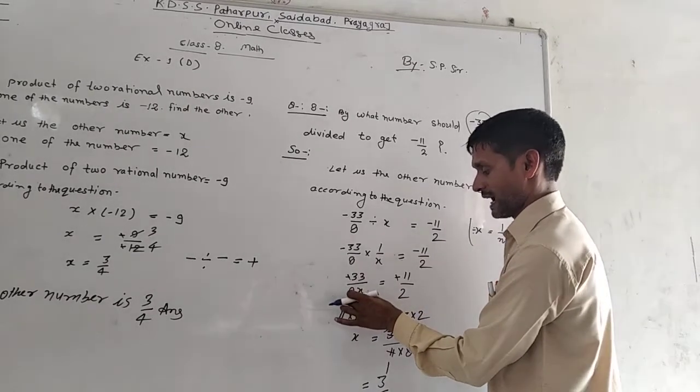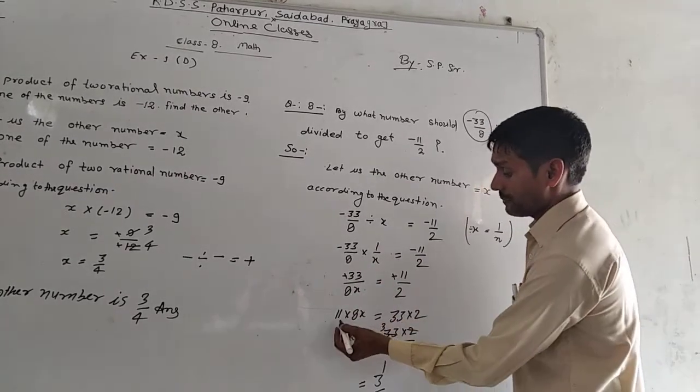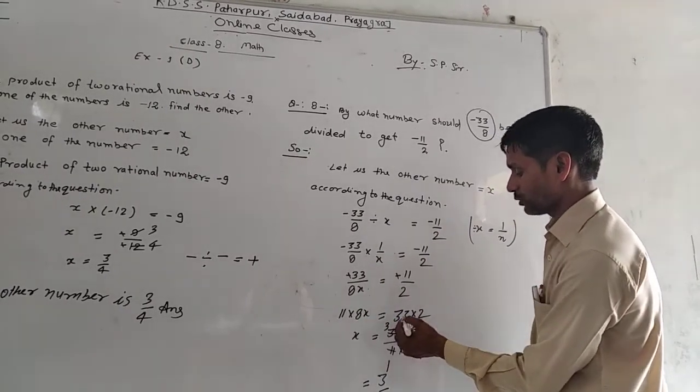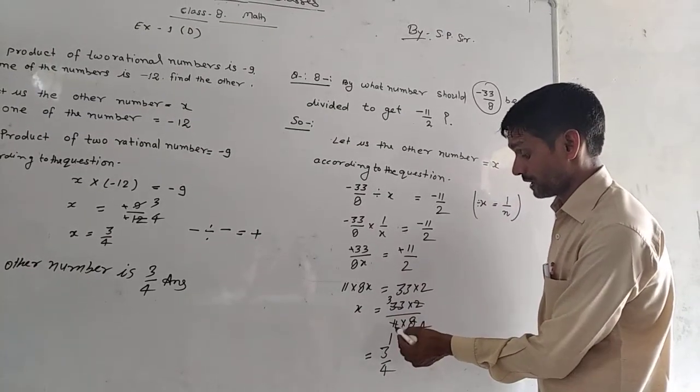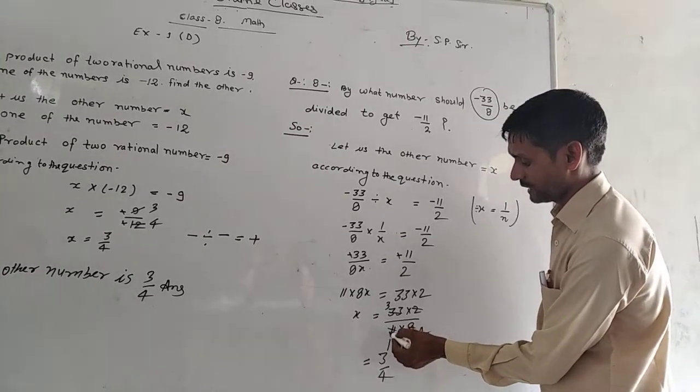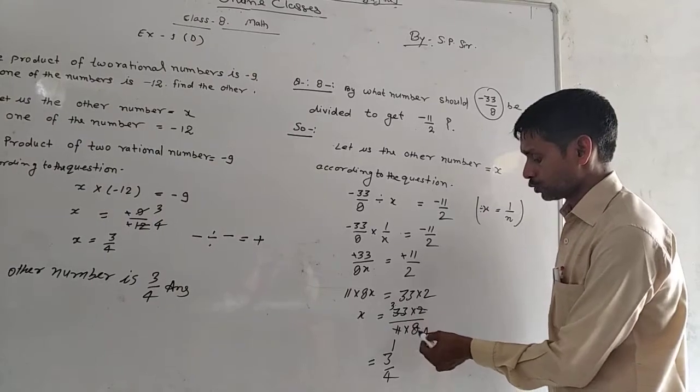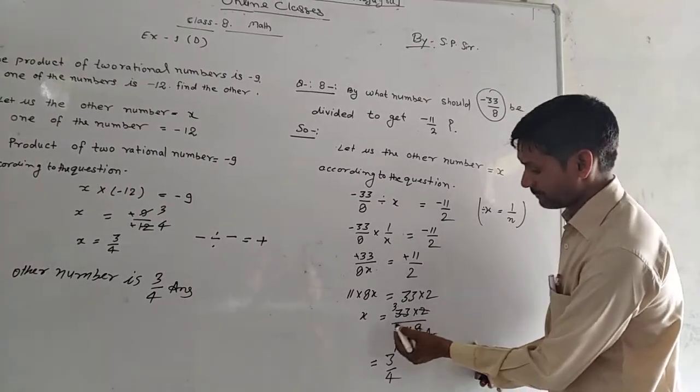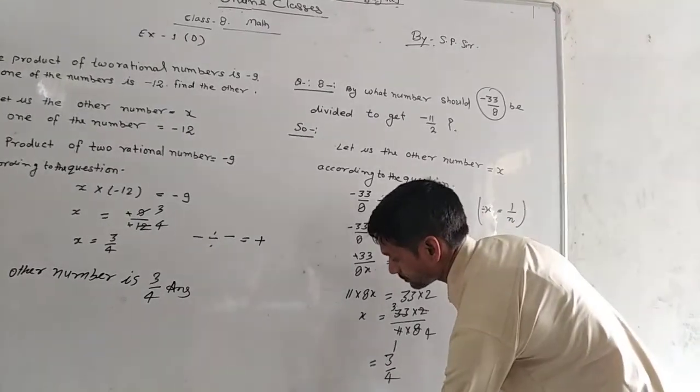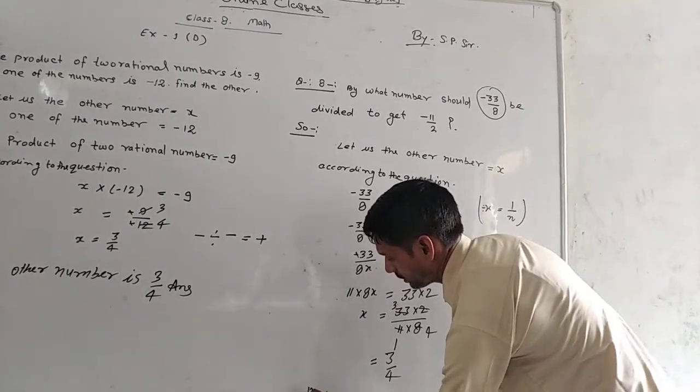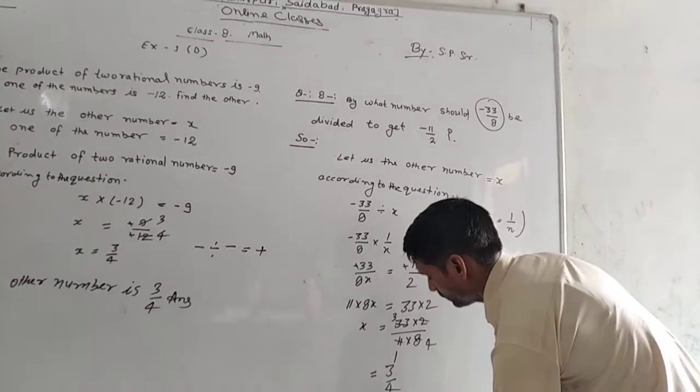Here we have 33 plus 33, 8 plus 8x. Minus and minus cross out. Now 11 into 8x is equal to 33 into 2. x equals 33 into 2 upon 11 into 8. Simplifying: 11 cancels giving 3, and 2 into 4 gives 8. So 3 by 4. The other number is equal to 3 upon 4.